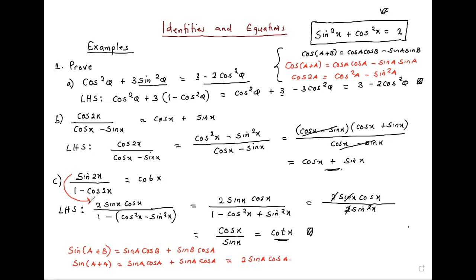So the key point is that you must not forget the identities that we listed sometime back. The listing was so that you could use them when you meet these identities.